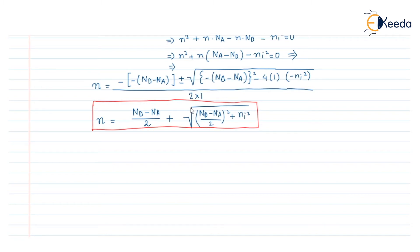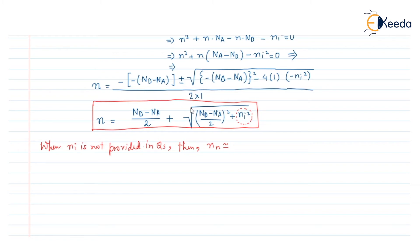However, sometimes in examinations or GATE examinations, the ni value is not provided. In that case, when ni is not given in the question, the electron concentration in the N-type compensated semiconductor nn equals Nd minus Na. Similarly, the hole concentration pn equals ni squared divided by nn.